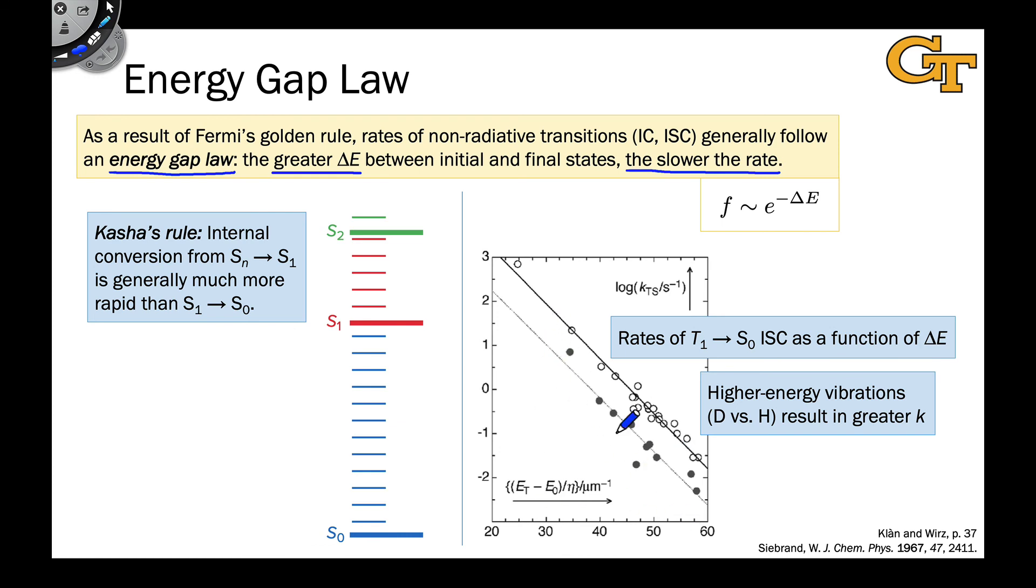And you can see for both sets of data, we'll get to the difference in a second. For both sets of data, there is a strong linear decrease in the logarithm of the rate as the energy gap increases, indicating this exponential dependence. The difference between the two data sets is that the open circles were deuterated aromatic hydrocarbons with all the hydrogens replaced with deuterium, while the closed circles were simple hydrogenated standard aromatic hydrocarbons.